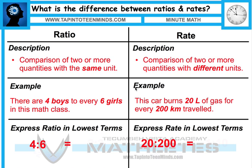Ratios: comparing two or more quantities with the same unit. An example would be four boys to every six girls in a math class — comparing people to people, that makes it a ratio.